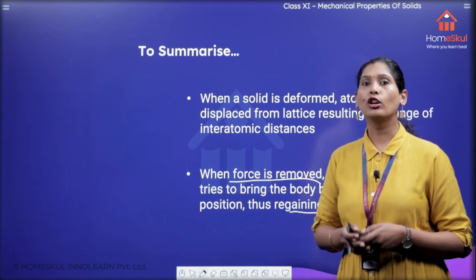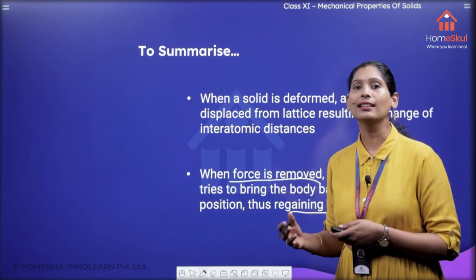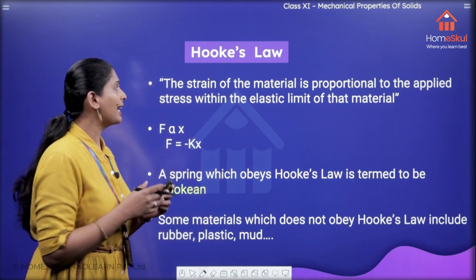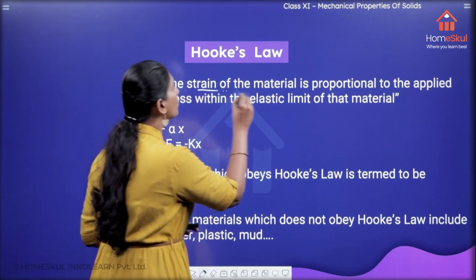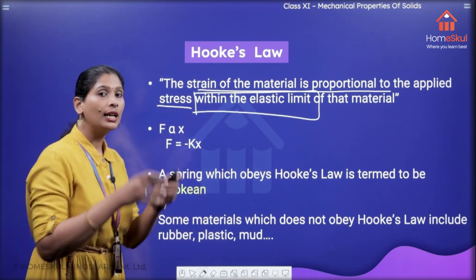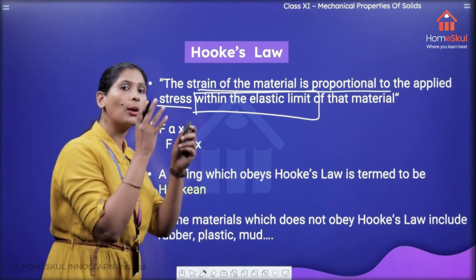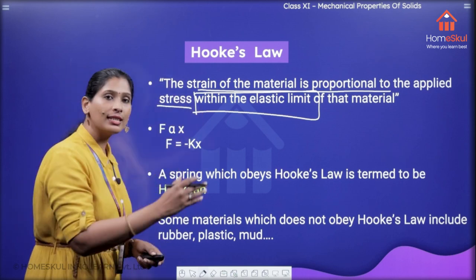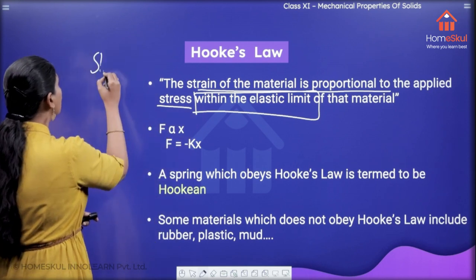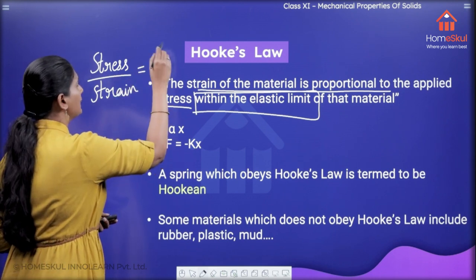An English physicist called Robert Hooke, when he analyzed these concepts, could determine that there is a relation between stress and the corresponding strain produced, and that was implied as Hooke's Law. So what does this law state? It says that the strain of the material is proportional to the applied stress within the elastic limit. So if the material is maintained within the limit of elasticity, then the strain produced in the material is proportional to the applied stress. We can say that stress divided by strain will be a constant — let that constant be capital E.